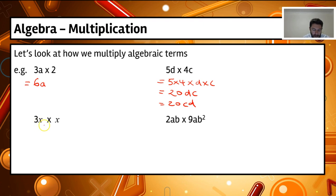Down the bottom we've got 3x times x now. So what we've actually got is 3 is multiplied by the number next to x, which is 1. So we've actually got 3, and then we've got x times x, which gives us x squared. So that's 3x squared.